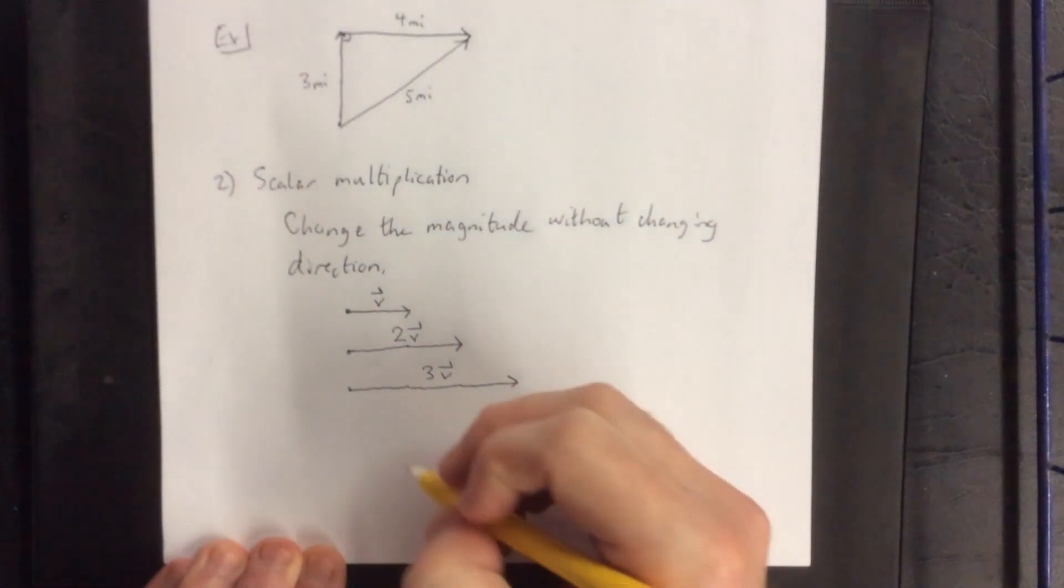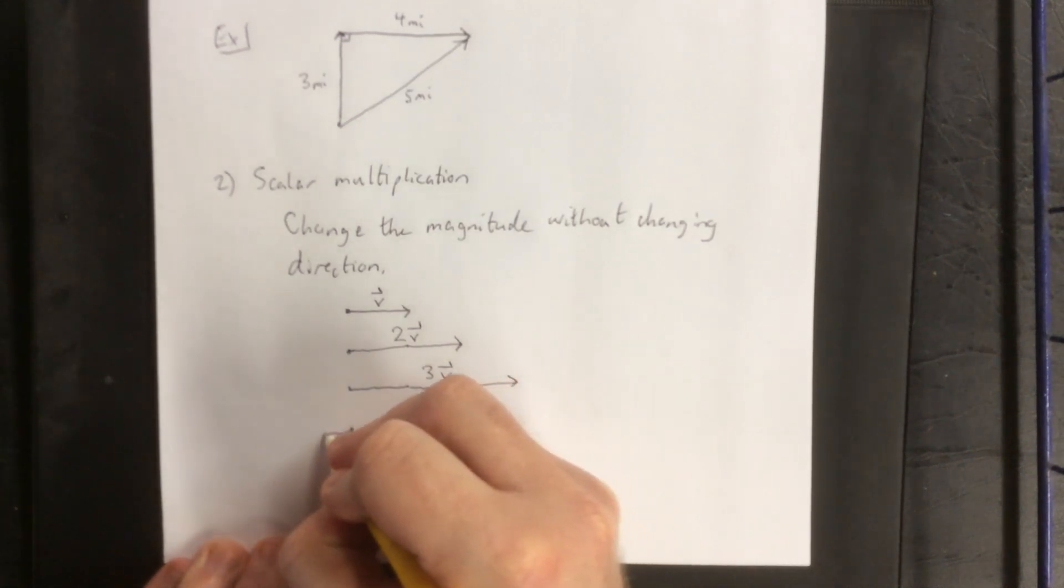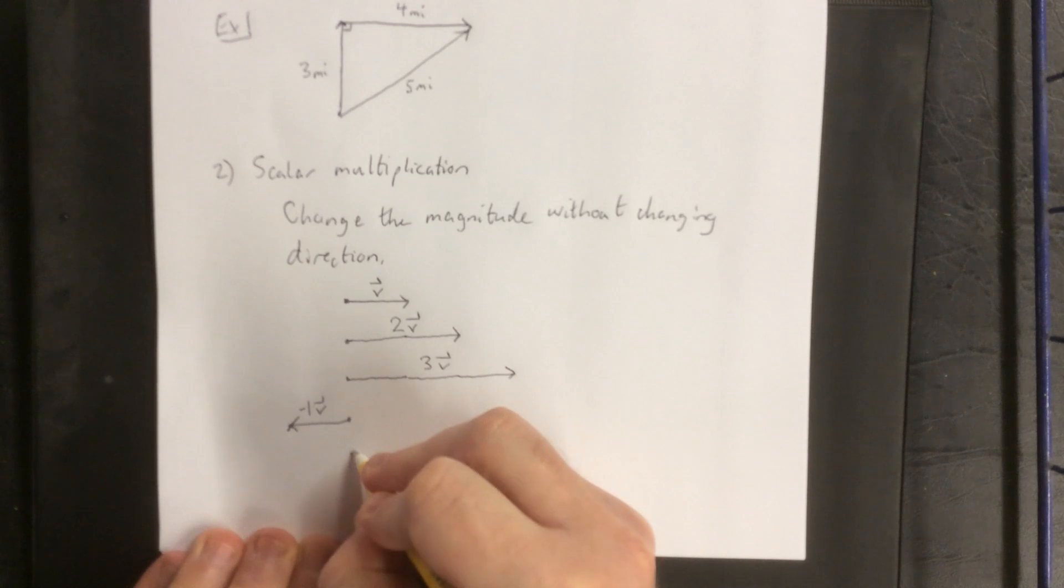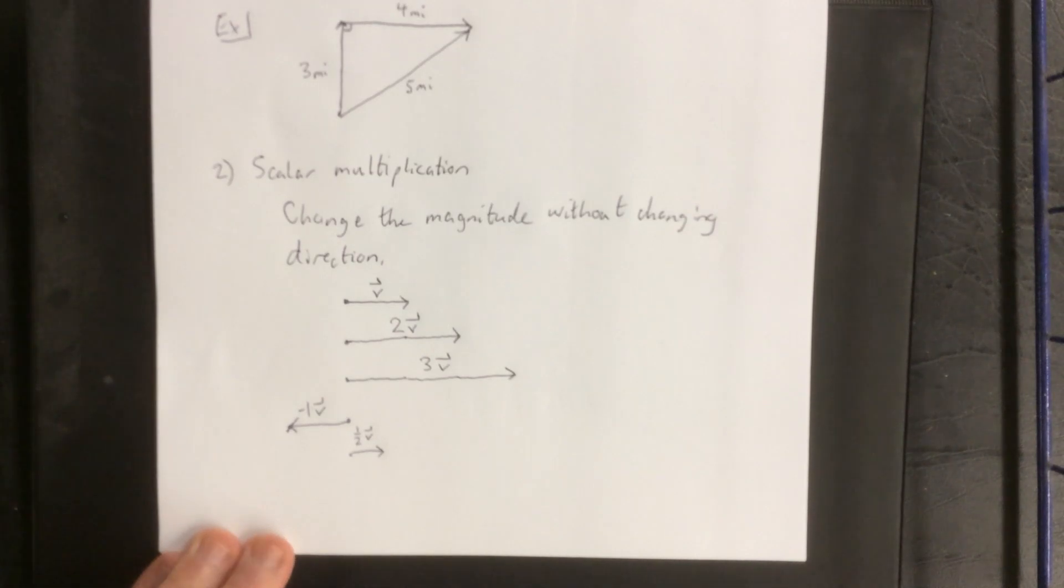Now there is one situation under which you can change the direction of the vector, and that would be if you had multiplied by a negative number. This would be negative 1 times v. Now scalars can also be smaller than 1, so if you wanted to create a vector that was half as long, you could say 1 half times a given vector. So should point in the same direction, just have a different length.